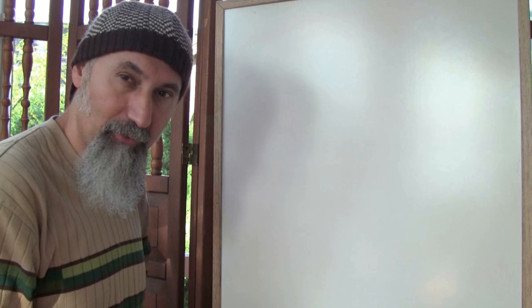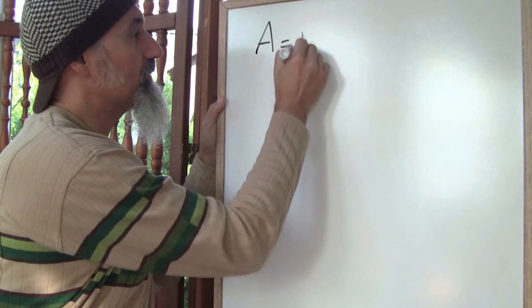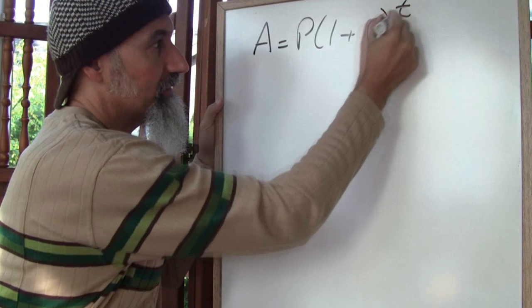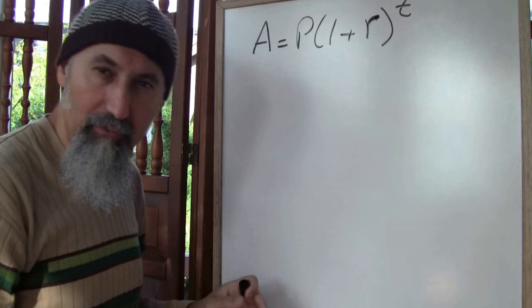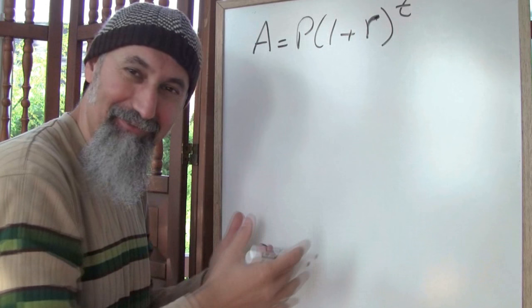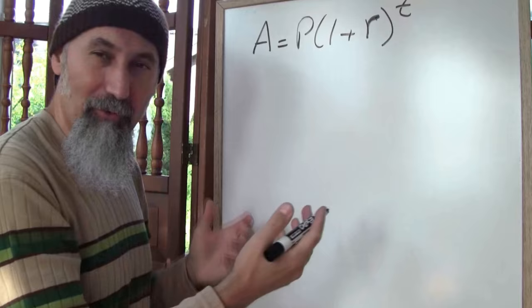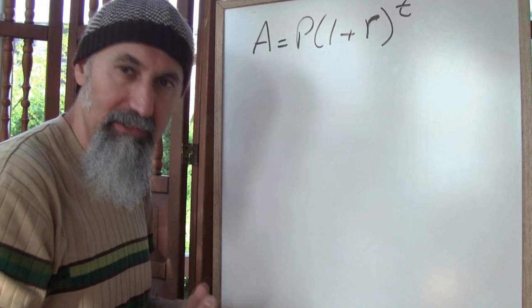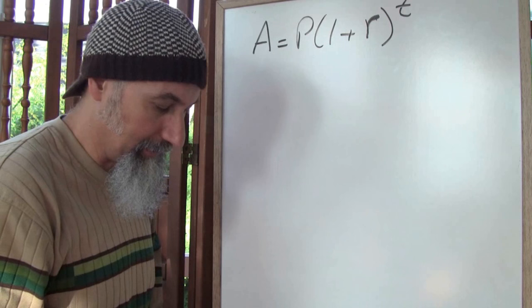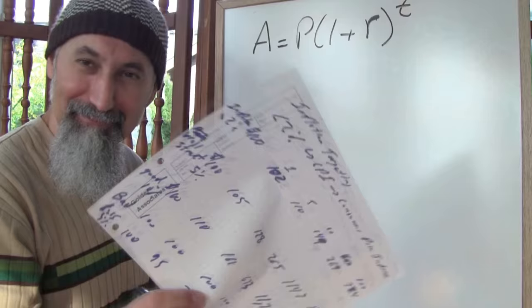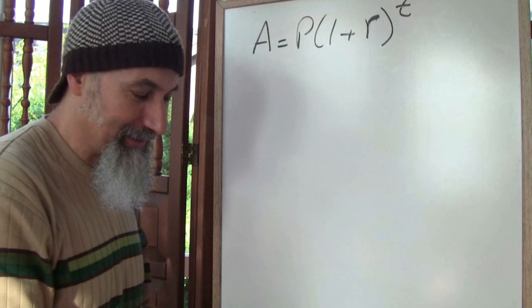We're going to use the simplified formula A = P(1 + r)^t, removing n since we're paying interest once per year and just looking at a few years. I've put together a table here, and what we're going to do is look at a few different rates of growth. We'll start off with $100 and look at what happens at 1, 5, 20, 50, and 100 years.